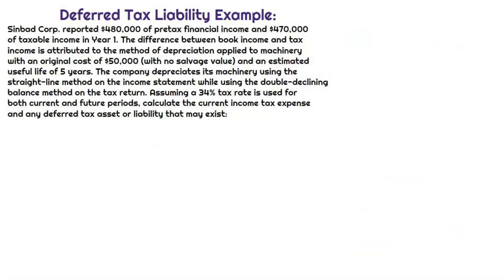Let's take a look at a pretty basic example, but this is something you can very easily see in a multiple-choice question on the exam. Sinbad Corp is reporting $480,000 of pre-tax financial income and $470,000 of taxable income in year one. We have a difference, so why the difference? The difference between book and tax income is going to get attributed to the method of depreciation applied to machinery that had an original cost of $50,000, no salvage value,